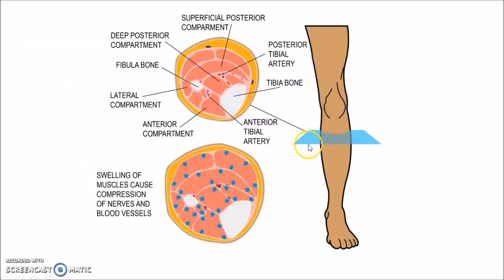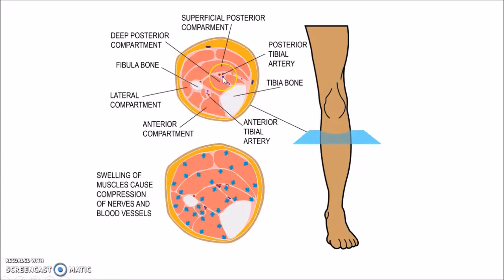This picture shows a cross section of the leg. As you can see, the leg has different compartments like the Posterior Compartment, Lateral Compartment and Anterior Compartment. This is the skin, this is the fascia, this is the tibia and this is the fibula. As you can see, the compartments contain vessels and nerves.